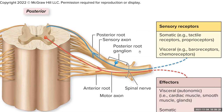For our sensory receptors located in the periphery, we have two types: somatic and visceral. Somatic are things you can consciously perceive — touch, pressure, vibration, proprioception. Visceral will be below your level of consciousness, happening all the time. That includes baroreceptors located in your blood vessels that monitor blood pressure and stretch in the vessel wall, and chemoreceptors that monitor the concentration of substances in your blood.